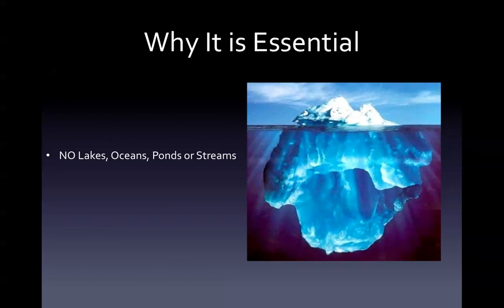Why it is essential for life: if water did not become less dense, ice would sink. If this happened, lakes, oceans, and even streams would freeze, with the exception of summer when a small portion of ice would melt. If this happened, fish and many other aquatic animals would be erased from Earth.